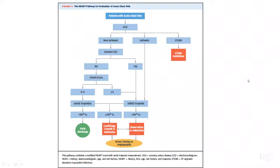Here is another flowchart to help doctors in the emergency room manage these patients. If a patient has active chest pain, you do an EKG. If the EKG shows ST elevation, the patient automatically rules in for myocardial infarction. If the EKG is suggestive of ischemia — such as T-wave inversions or ST depression — they will also automatically meet criteria for MI, as a non-STEMI.